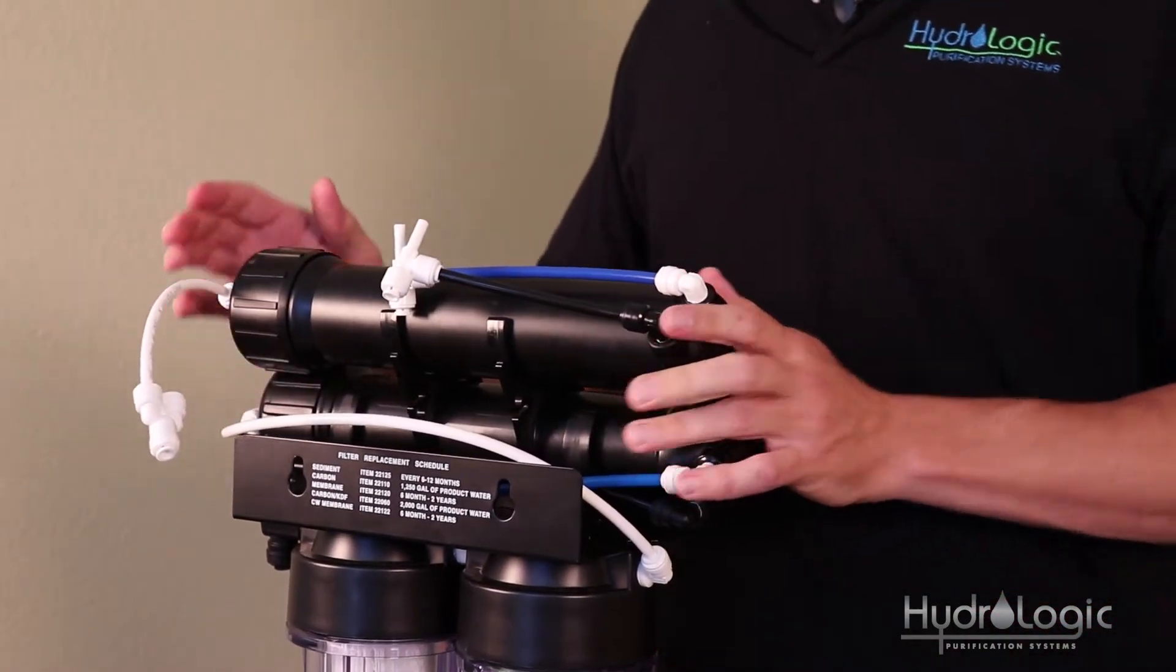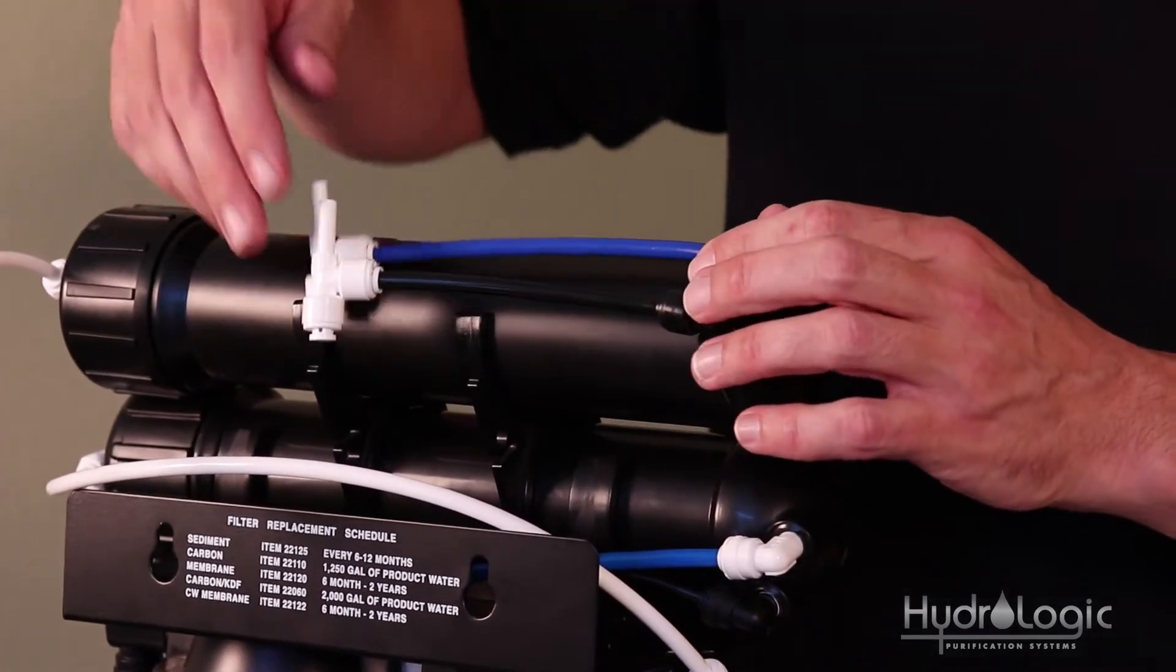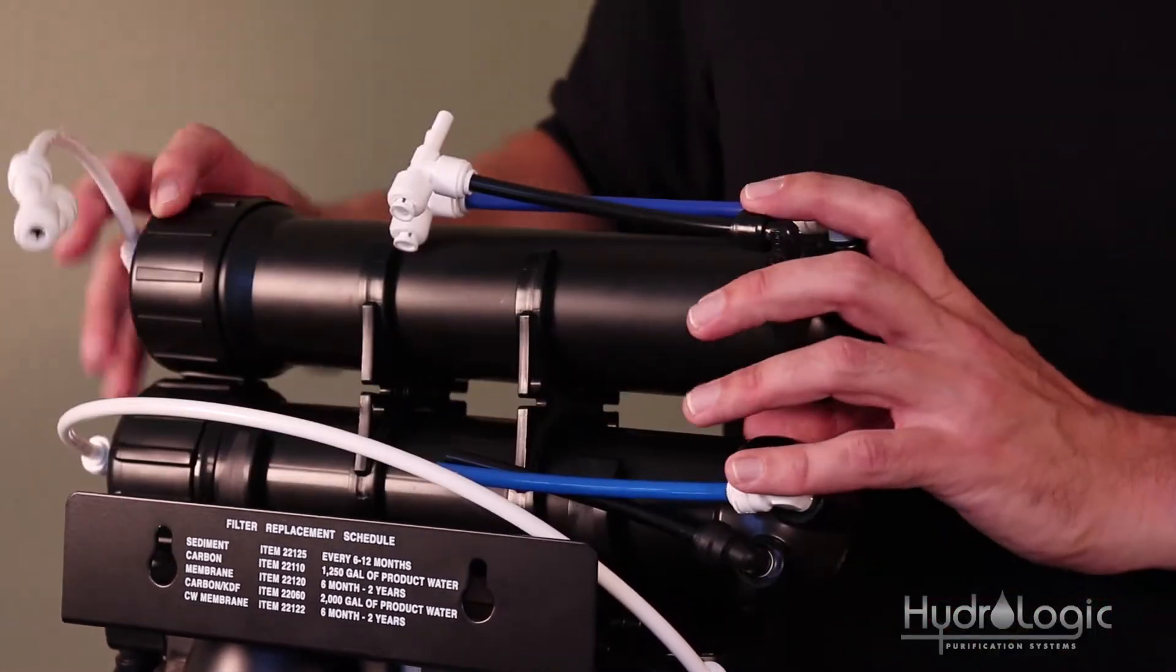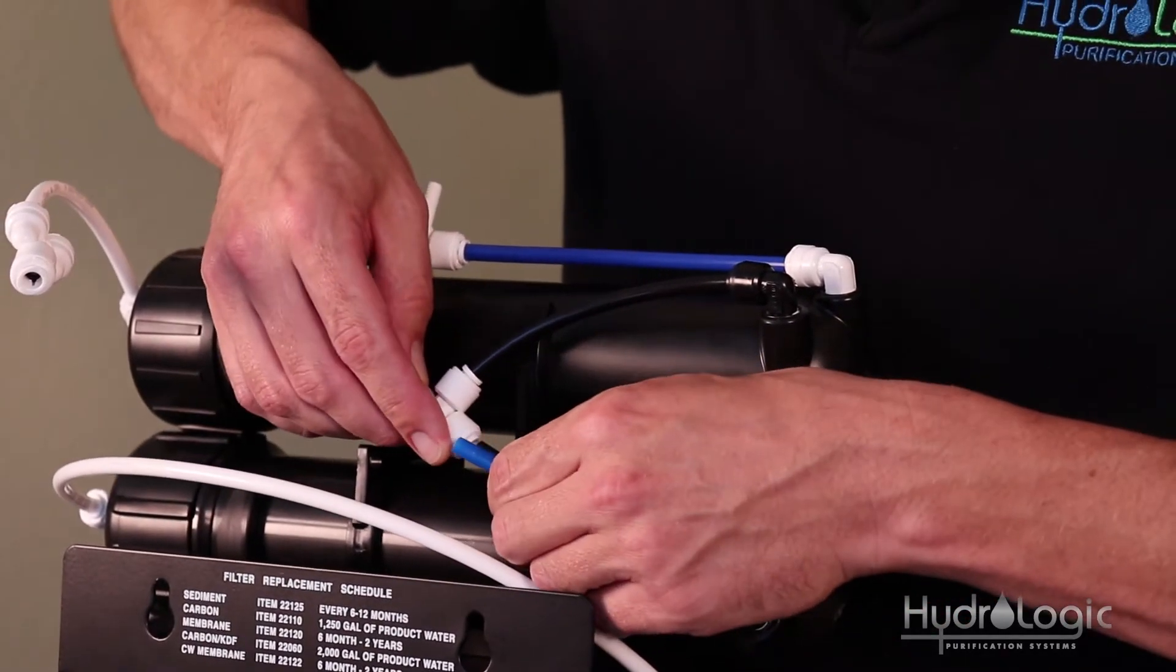Now, if you'll notice, your new membrane assembly has these links of blue and black tubing with what's called a stem T on them. So, just take the Quick Connect fitting and join the two wastewater lines together.